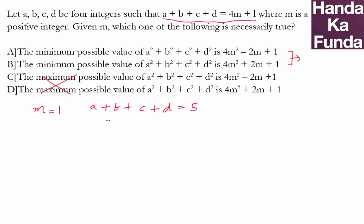So when will a square plus b square plus c square plus d square be minimum? When all four of them are equal to each other. That means all four of them are equal to 1.25.